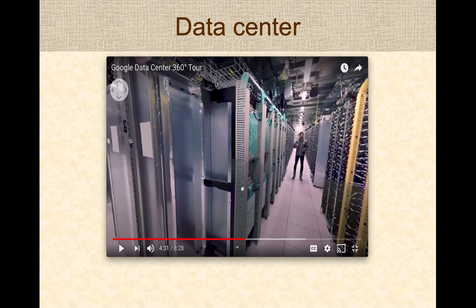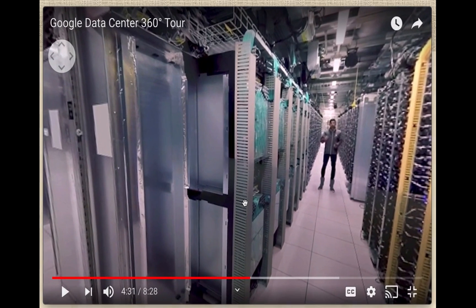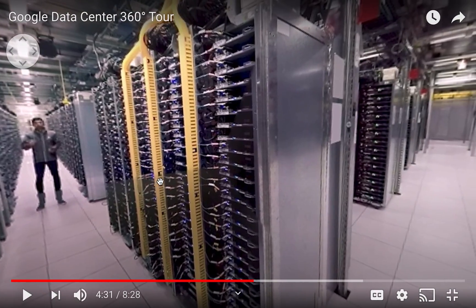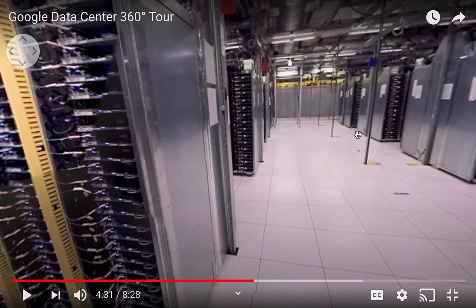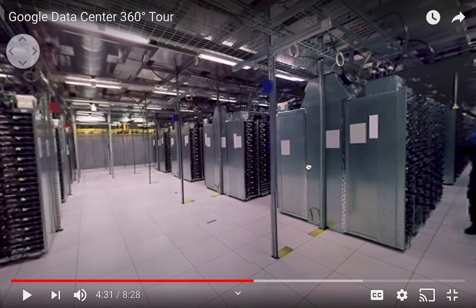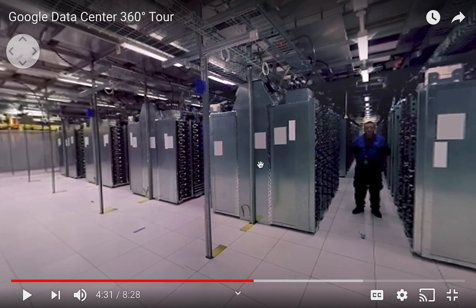Let's do a quick tour of a data center to get a mental model of what one is. A data center consists of many computers racked together in a large building. When you look around a data center, all you'll see is racks and racks of computers that are powered and cooled.